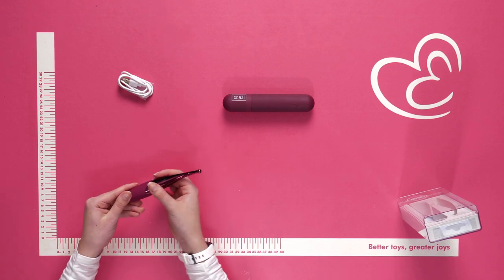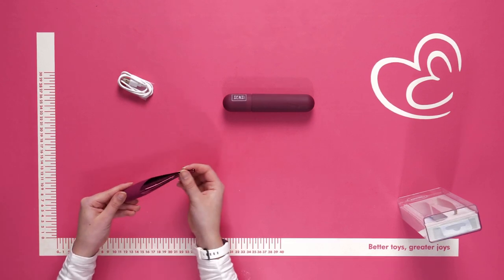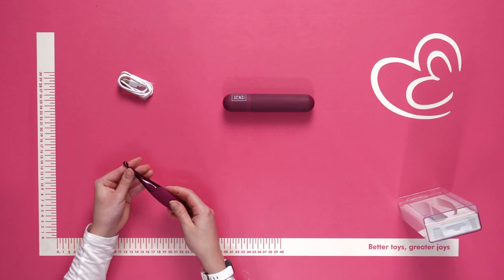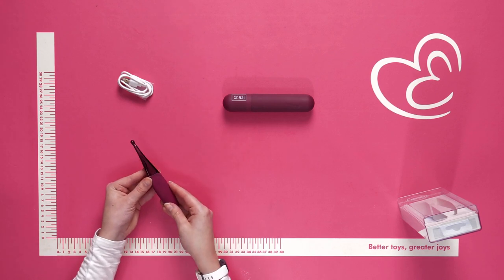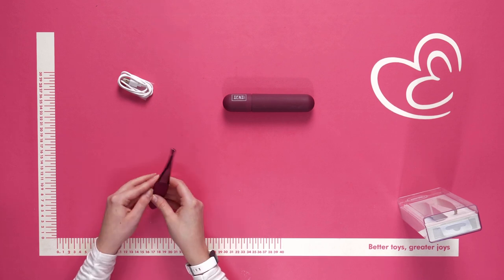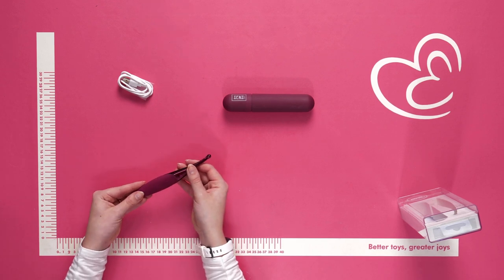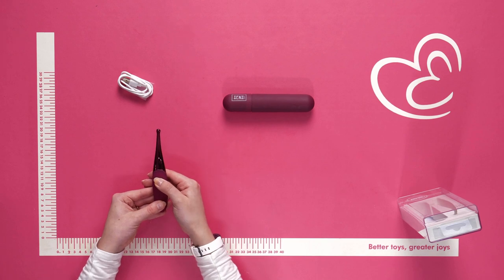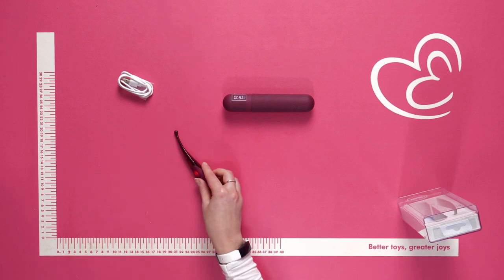The material feels very silky, soft, and smooth, so it's perfect for your skin. You can use it, for example, on your clitoris, nipples, or anywhere else on your body for external stimulation as well. To turn on, press and hold for a few seconds and the vibrations begin.